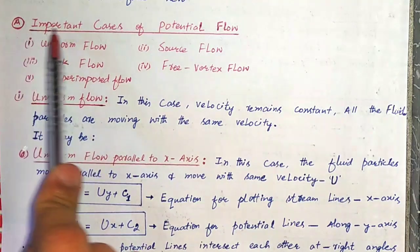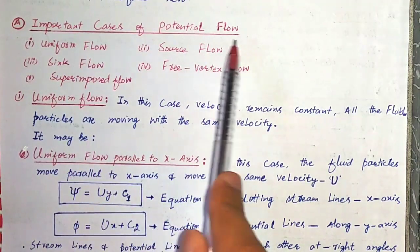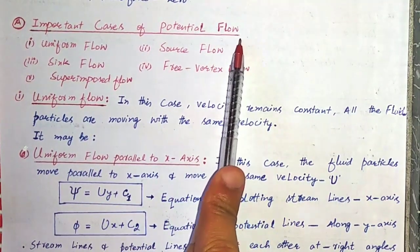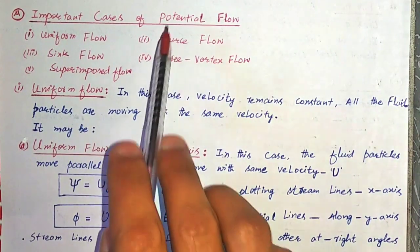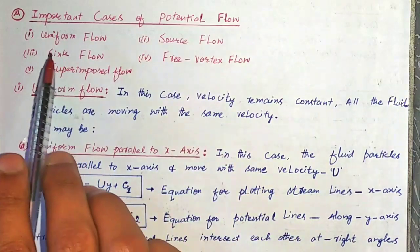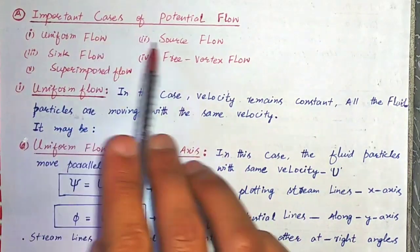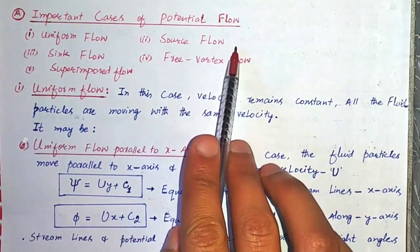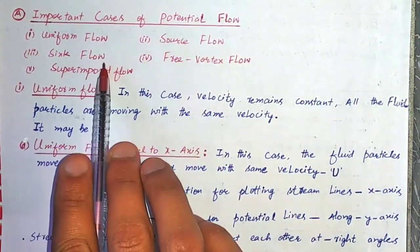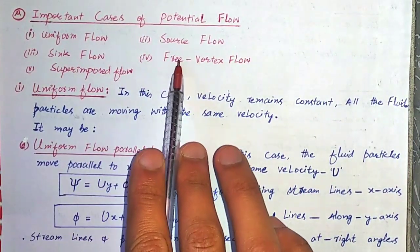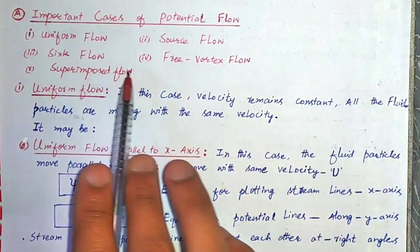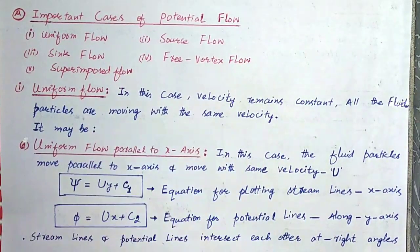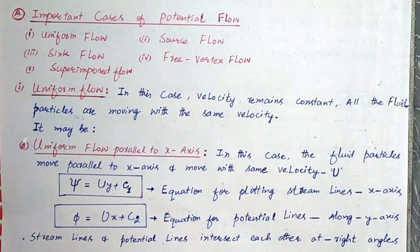Next, we will discuss the important cases of potential flow. There are five important cases: first is uniform flow, second is source flow, third is sink flow, fourth is free vortex flow, and the fifth is superimposed flow. We will discuss them one by one.